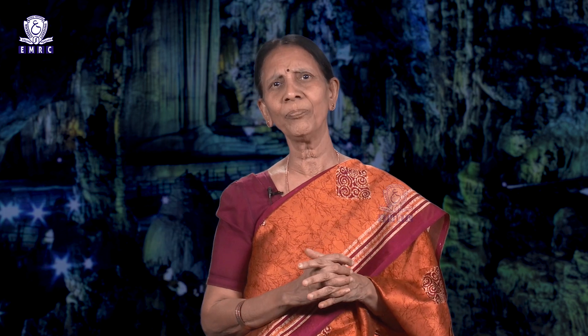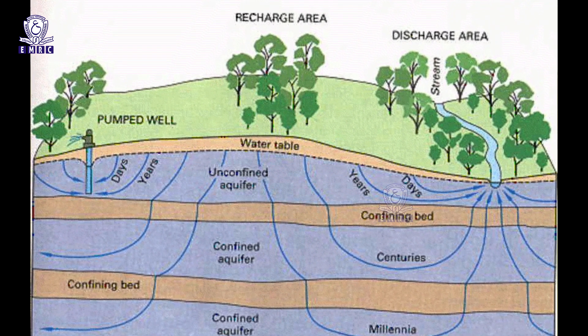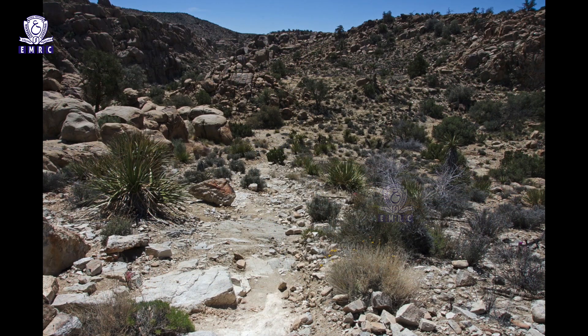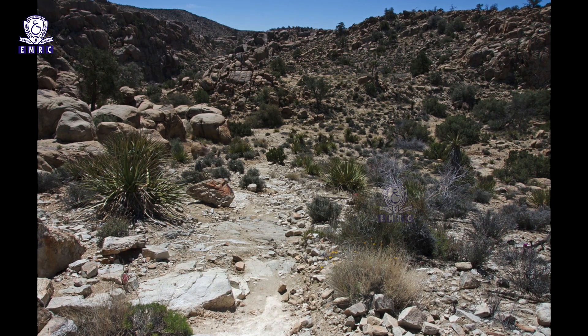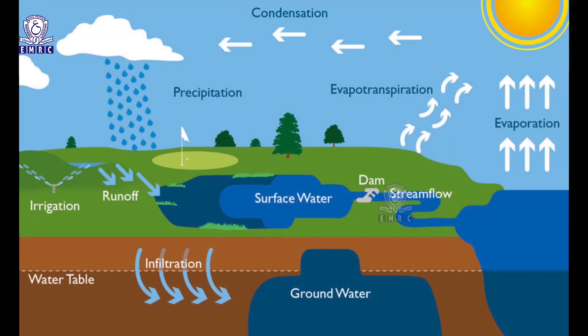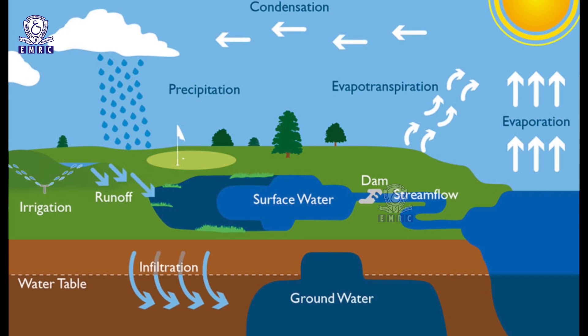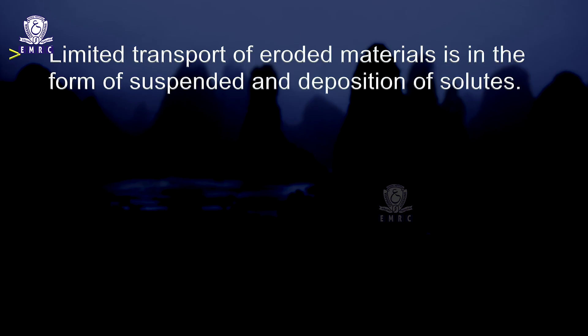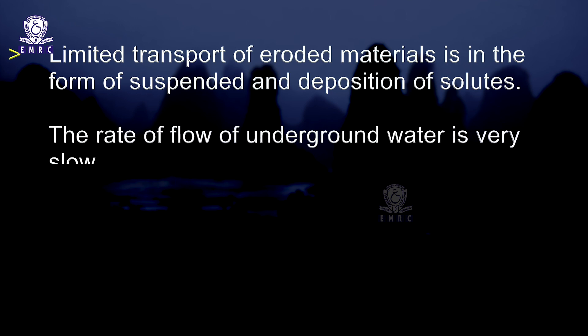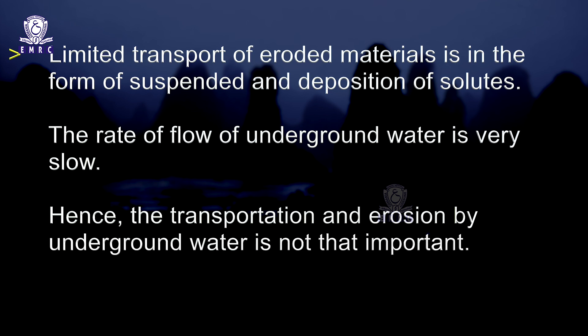Initially water follows the surface drainage and surface water moves through the joints, slowly converting into underground water. The work of underground water is exceedingly slow because of its very slow rate of movement. The work of underground water includes chemical erosion of soluble rocks at the surface by surface water and below the surface by percolating and moving underground water. Limited transport of eroded materials is in the form of suspended load and deposition of solutes. Hence, transportation and erosion by underground water is not that important. As the movement of underground water is very slow, it cannot transport enough material; as a result, chemical erosion and deposition go together.